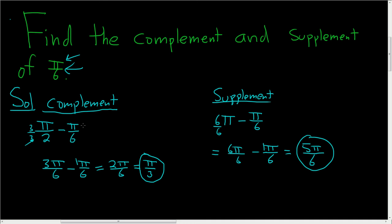So to find the complement just take pi over 2, subtract your angle. To find the supplement just take pi and subtract your angle.